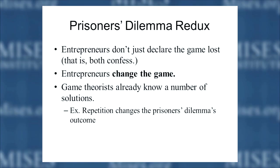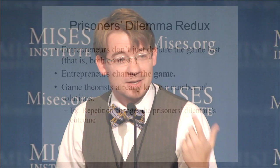What if we grant foresight and alertness to our prisoners? Entrepreneurs wouldn't just declare the game lost and accept five years apiece. Entrepreneurs are game changers in the game-theoretic sense. Game theorists already know that one way to change the prisoner's dilemma to end up with a better outcome is repetition. If you repeat the game multiple times, a player who confesses in round one can be punished in round two; playing nice in round one can be rewarded later. This changes the game so that better outcomes can be enforced.